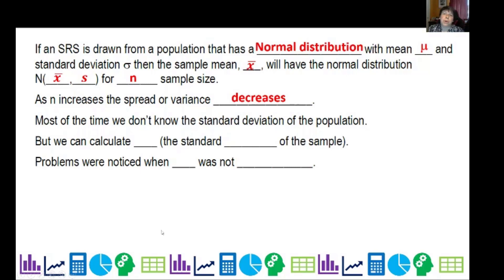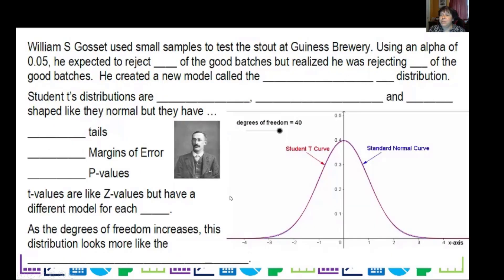Most of the time we don't know the standard deviation of the population, but we can calculate S, which is known as the standard error of the sample. Now problems were noticed when n was not large.